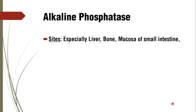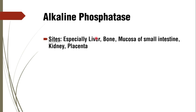Coming to the various sites where alkaline phosphatase is found in highest concentration: especially liver, bone, mucosa of small intestine — for lipid transport as discussed — kidney, and placenta. These are the sites where we find the highest concentration or highest activity of alkaline phosphatase.